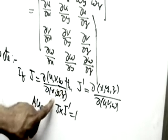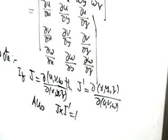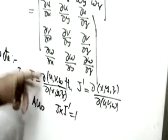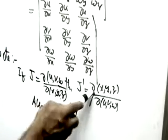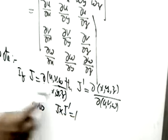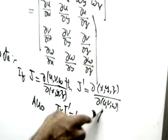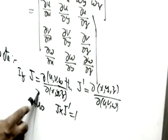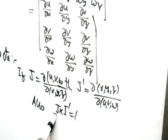If J = ∂(u,v,w)/∂(x,y,z), then J' (J-dash) is the reciprocal: ∂(x,y,z)/∂(u,v,w). You reverse — x,y,z goes to the numerator and u,v,w to the denominator. Always remember: J × J' = 1.